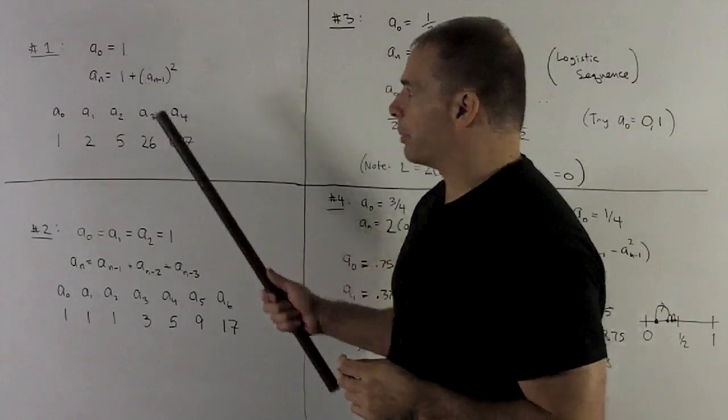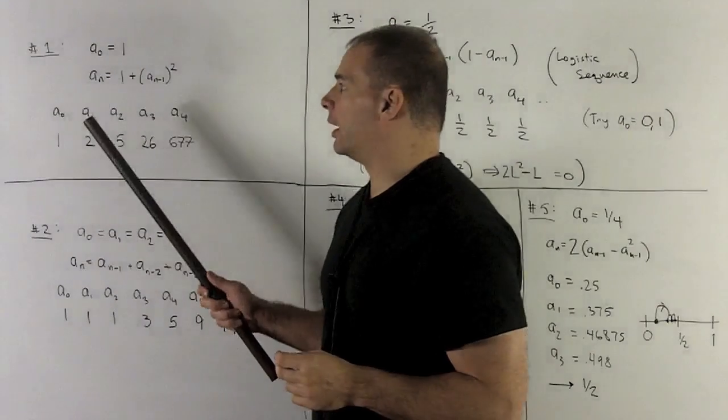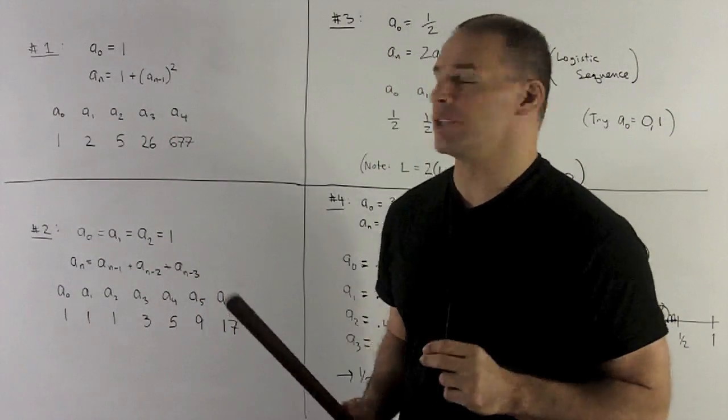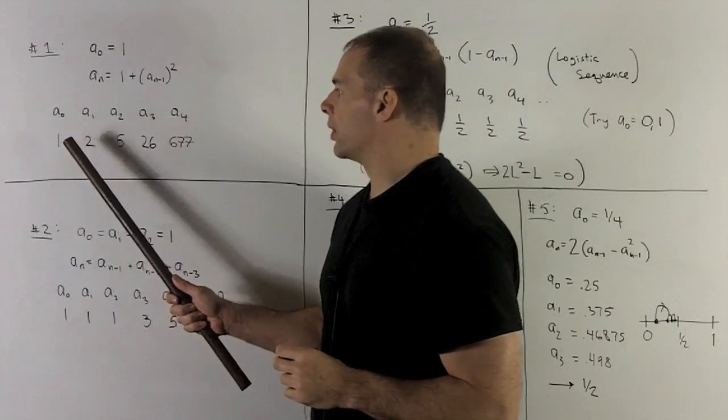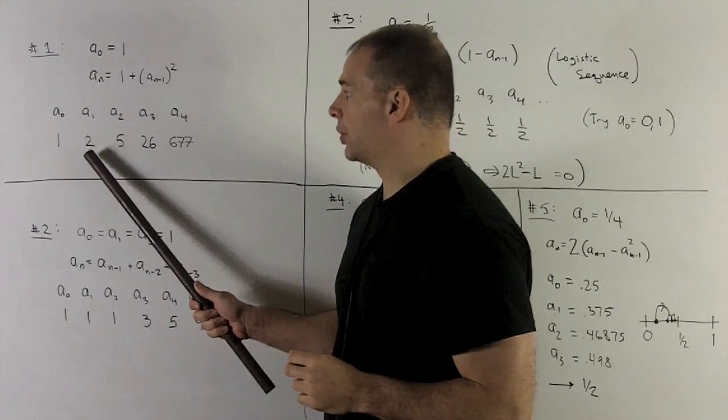So, as an example, start with a₀ equals 1, aₙ equals 1 plus aₙ₋₁ squared. So I would start with 1, and I take 1, square it, and add 1, gives me a 2.